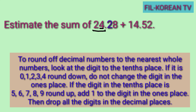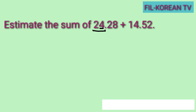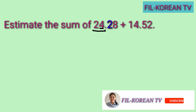Hindi natin babaguhin yung number sa rounding place. Pero kapag ang number naman ay mataas sa 5 o 5 pataas — ibig sabihin 5, 6, 7, 8, 9 — round up. Kapag mag-round up naman tayo, dadagdagan natin ng 1 ang digit sa rounding place. Ngayon, dahil 2 ang sumunod sa 4, ang gagawin natin ay round down — hindi natin babaguhin. Kaya ang whole number nito ay 24.